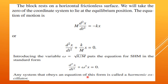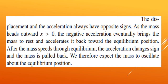Any system that obeys this equation is called a harmonic oscillator. The displacement and the acceleration are always opposite in sign. As the mass heads towards x > 0, the negative acceleration eventually brings the mass to rest and accelerates it back towards the equilibrium position. After the mass passes through the equilibrium position, the acceleration changes sign and the mass is pulled back. The mass therefore oscillates about the equilibrium position.